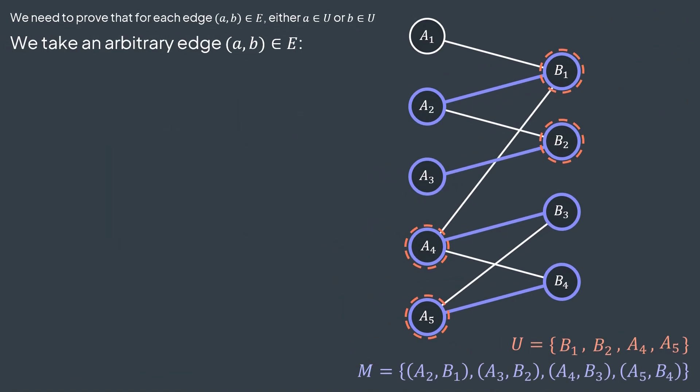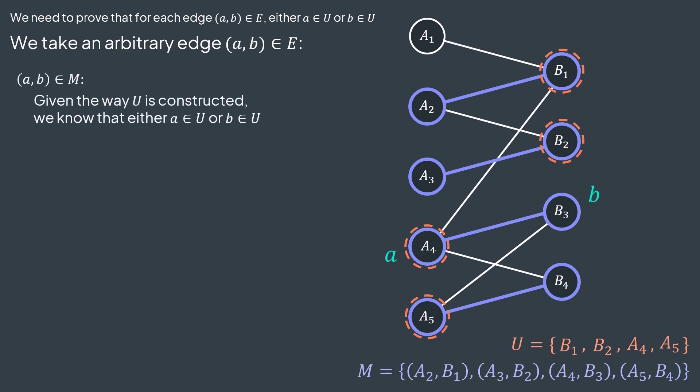Let's take an edge (a, b) from the edges of the graph. If (a, b) is in M, then surely one of its ends is in U, because we were adding to U one of the ends of each edge of M, so we added either a or b when constructing U. As an example, we can take the edge a4 b3, it's in M, and a4 is in U.